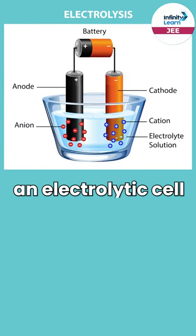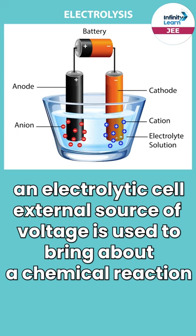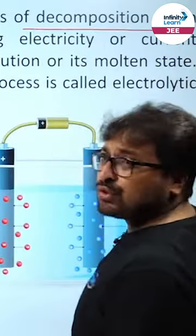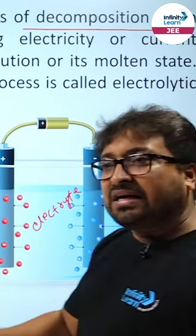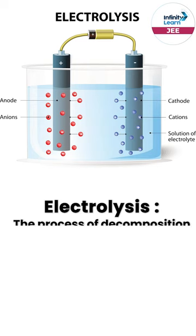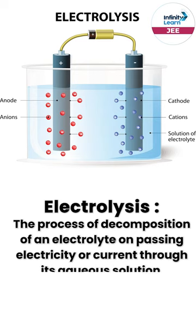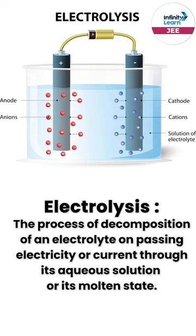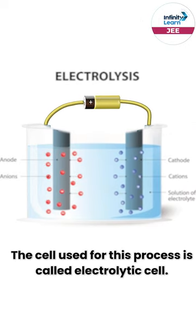So in an electrolytic cell, an external source is applied to bring about a chemical reaction. Electrolysis is the process of decomposition of an electrolyte by passing electricity or current through its solution or its molten state. The cell used for this process is called an electrolytic cell.